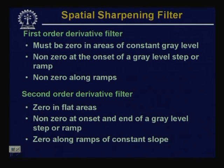For a second order derivative filter, the response should be zero in flat areas, non-zero at the onset and end of a grey-level step or ramp, and zero along ramps of constant slope. Whichever derivative filter is used, we need a discrete domain formulation. The first order derivative for a discrete 1D signal is: ∂f/∂x = f(x+1) − f(x). The second order derivative is: ∂²f/∂x² = f(x+1) + f(x−1) − 2f(x).